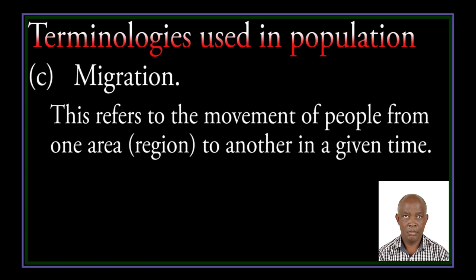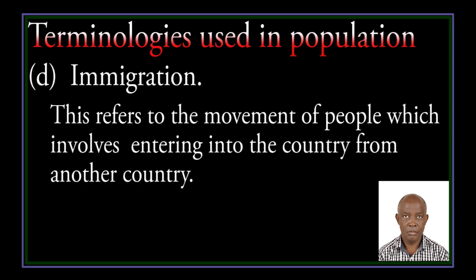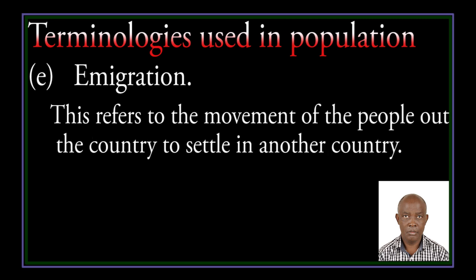Migration: this refers to the movement of people from one area or region to another in a given time. Immigration refers to the movement of people which involves entering into a country from another country, or a region from another region. Emigration refers to the movement of people out of the country to settle in another country.